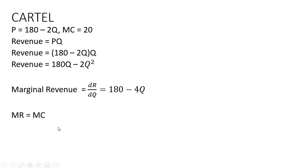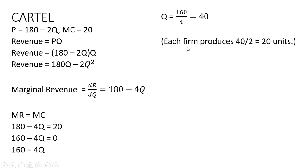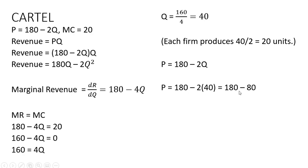For profit maximization, we set marginal revenue equal to marginal cost: 180 - 4Q = 20. Solving for Q: subtracting 20 from both sides, adding 4Q to both sides, then dividing through by 4 — 160 divided by 4 gives us 40. So market output under cartel is 40 units. Each firm produces half, so 20 units each. The market price is 180 - 2(40) = $100 under cartel, which is the monopoly outcome.